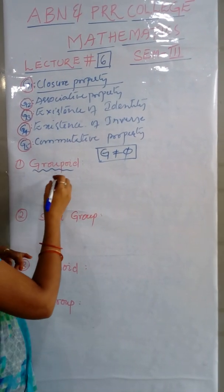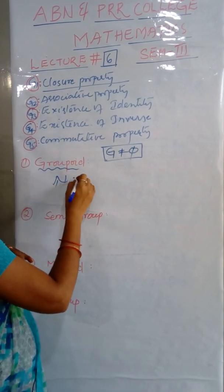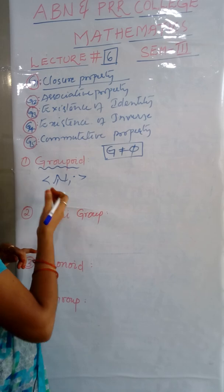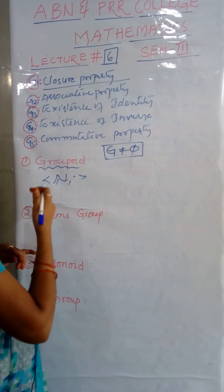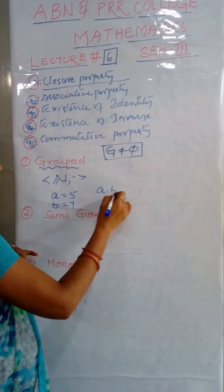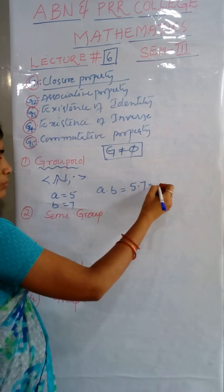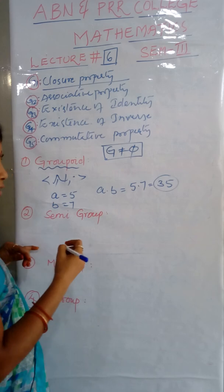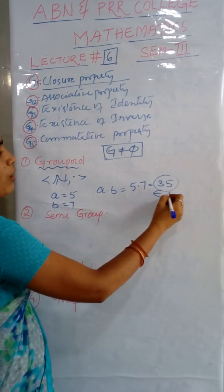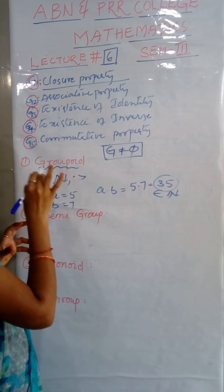The example is, you may consider N, dot. What is N? Set of naturals. If you consider any two elements, A as 5 and B as 7, A dot B equals 5 dot 7 which equals 35. Is 35 a natural number? Yes, evidently this is a natural number. So it belongs to the set N. That's why we are calling N, dot a groupoid.